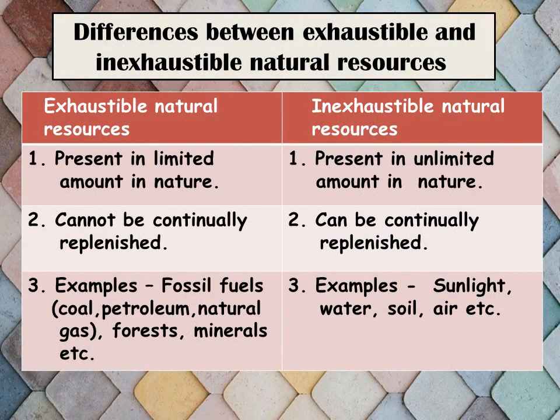Let us discuss some differences between exhaustible and inexhaustible natural resources. Exhaustible natural resources are present in a limited quantity in nature, whereas inexhaustible natural resources are present in unlimited amount in nature. Exhaustible natural resources cannot be continually recharged or replenished, whereas inexhaustible natural resources can be continually replenished. Examples of exhaustible natural resources include fossil fuels, forest, and minerals, whereas examples of inexhaustible natural resources include sunlight, water, soil, and air.